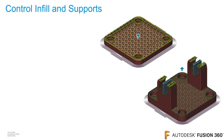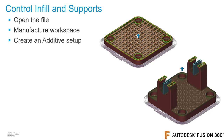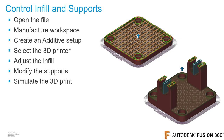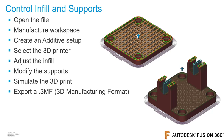If you want to control the infill and supports for the file that will be sent to the 3D printer, open the file and make the manufacturer workspace active. Then you're going to create an additive setup, select the 3D printer, adjust the infill, modify the supports, and simulate the 3D print to make sure everything looks good. Then you can export a .3MF file, which stands for 3D manufacturing format, or you can export a .gcode file.